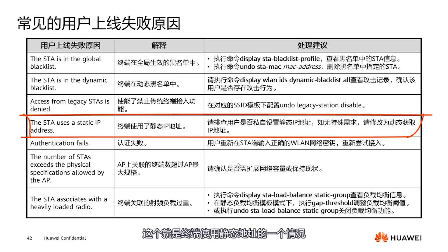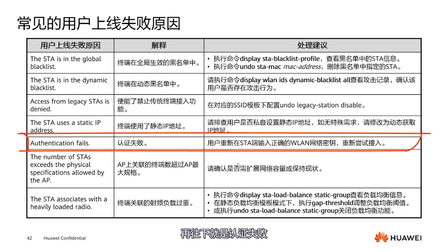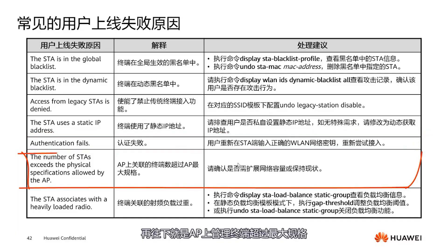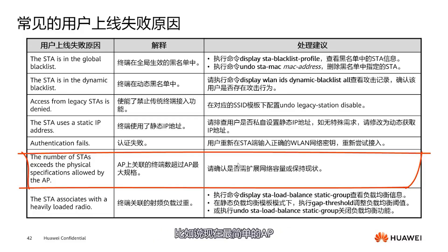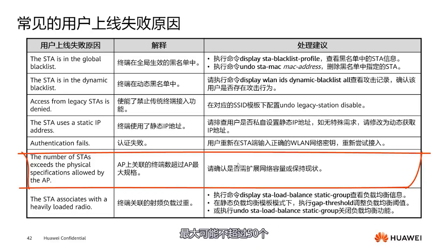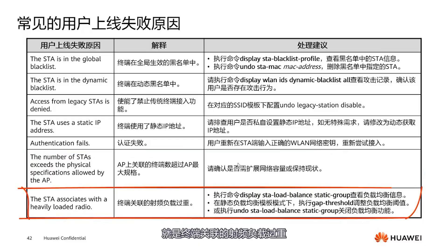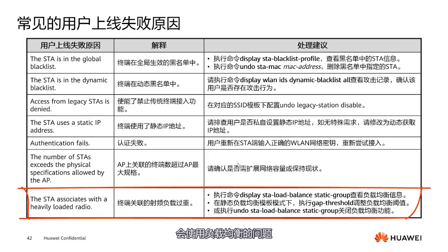Exceeding the maximum capacity of AP-managed terminals is very rare — the load generally does not exceed limits. For example, even simple APs today might support 256 users, but we might limit it to a maximum of 50, which could lead to terminal limit issues. There is also the issue of the RF load being too heavy on associated terminals, similar to RF tuning problems. In load balancing scenarios — such as conference rooms — several APs balance the load among themselves, distributing the total number of users across all APs.